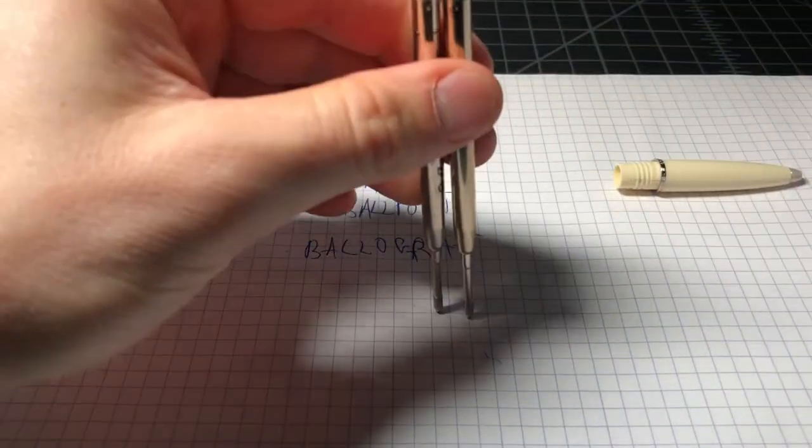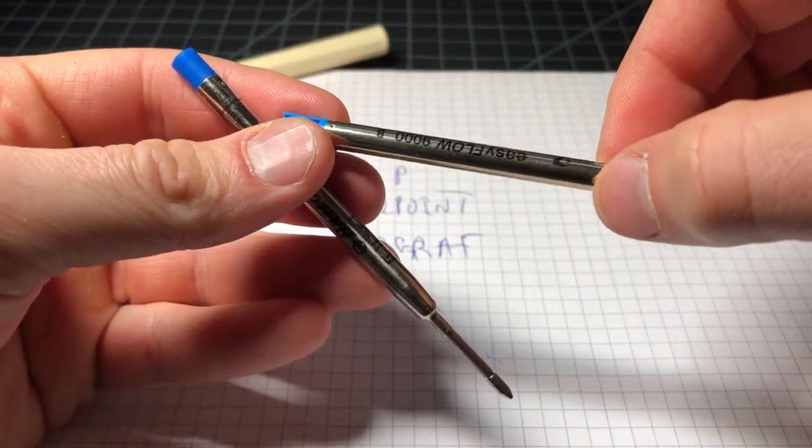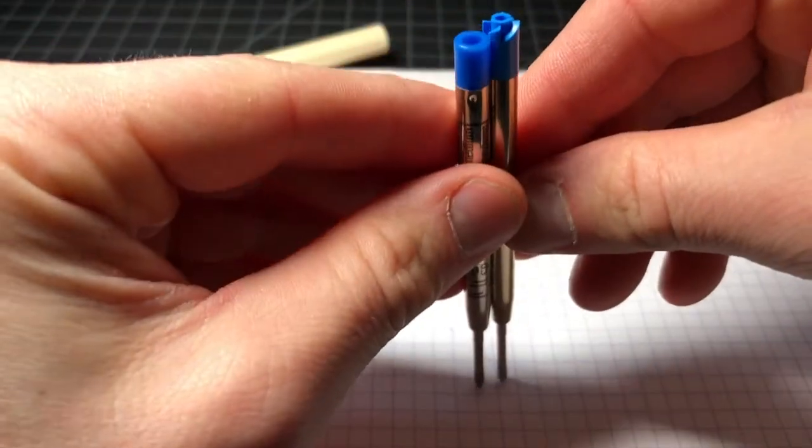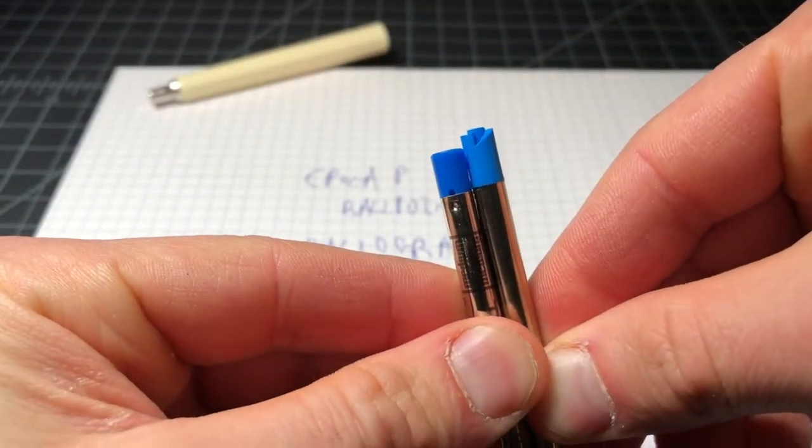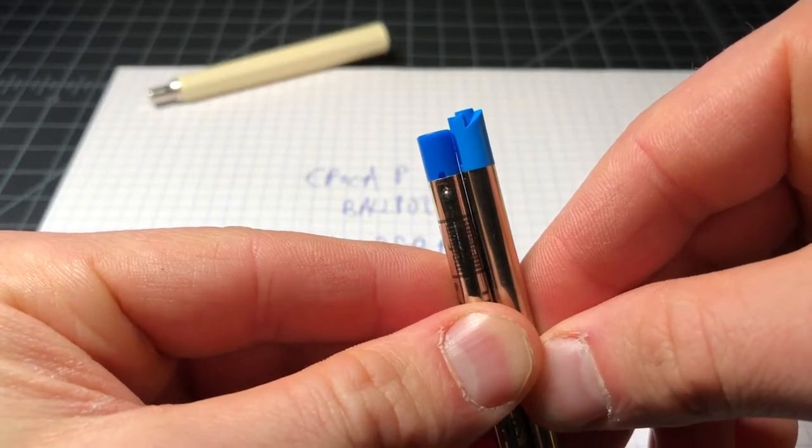First off, this is a Schmidt EasyFlow 9000, which is kind of like a best-in-class of the Parker refills. So, as far as height goes, pretty similar. You know, maybe an eighth of an inch off.